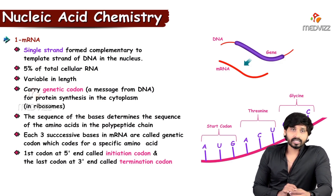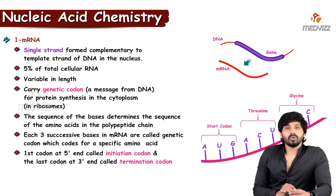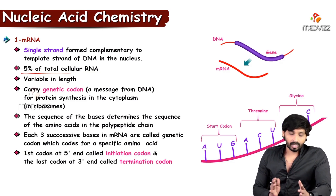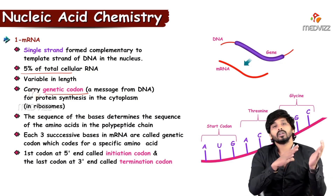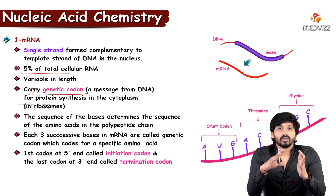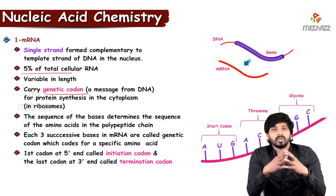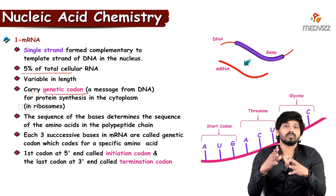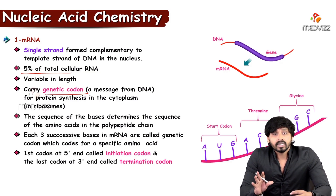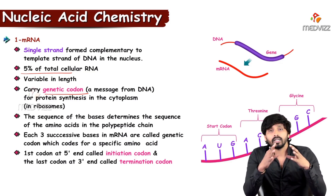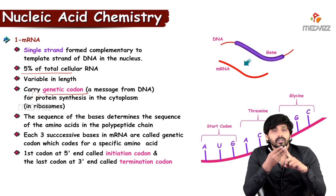mRNA is also a single-stranded molecule. Out of total cellular RNA, mRNA counts for 5 percent. It is variable in length and carries the genetic codons given from DNA. These codons act as a message to synthesize proteins in the cytoplasm at the ribosome level. The sequence of bases determines the sequence of amino acids. The genetic code consists of bases — each genetic codon carries three bases.